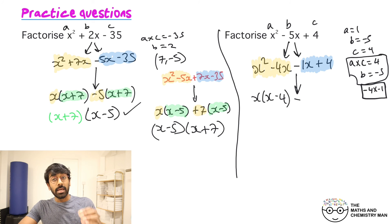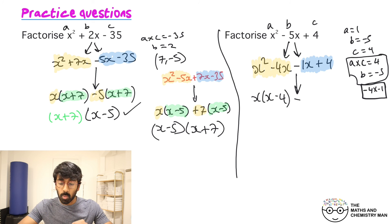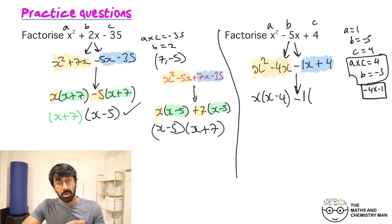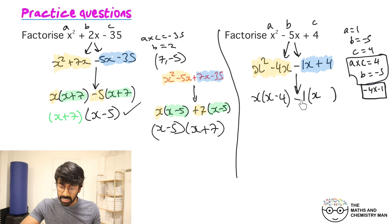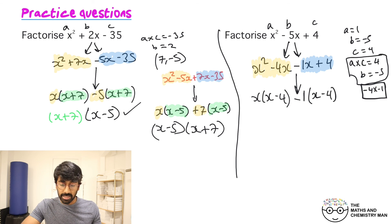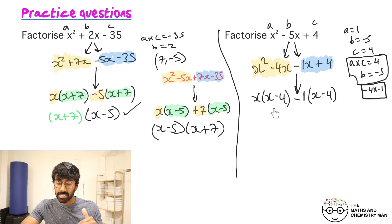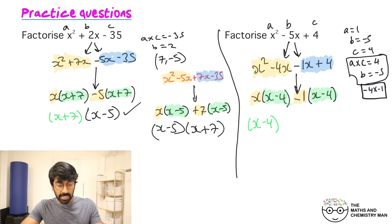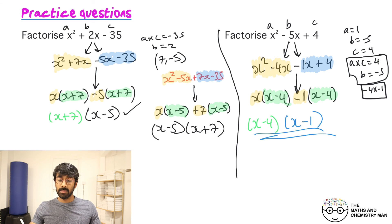Highlight the first two terms and the last two. Bring the minus sign down. From the yellow part, factorize out x, leaving x minus 4. For the blue part, if you're unsure what to take out, just take out a 1. Inside the bracket: minus 1 times x gives minus x, and minus 1 times minus 4 gives positive 4. Brackets match — both are x minus 4. So first bracket is x minus 4, second is x minus 1. Done.